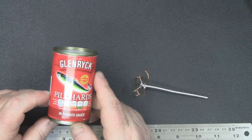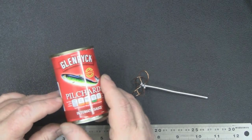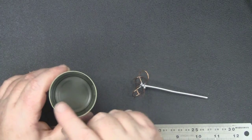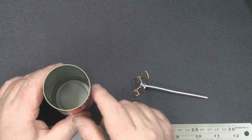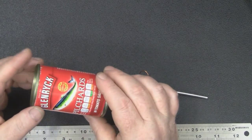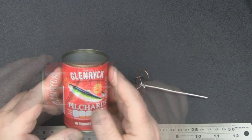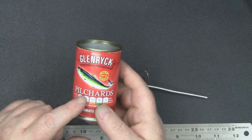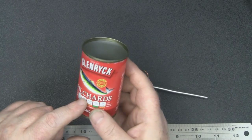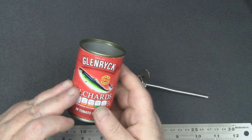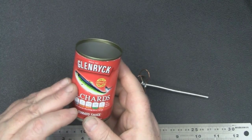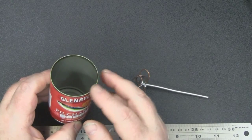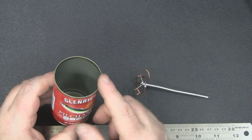The can I'm going to use for the 5.8GHz is this Pilchards can that I picked up from my local supermarket. The diameter across here is actually 53mm and the length is 85mm. If you have a look around your supermarket you could probably find these. Tins of tomato puree are in a can that's very similar to this, a little bit shorter but it's still got a diameter around that 50mm mark which you actually want to look for.